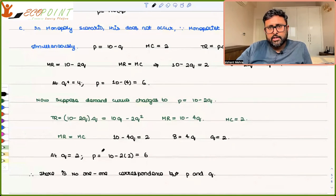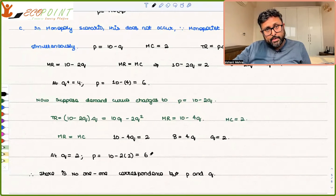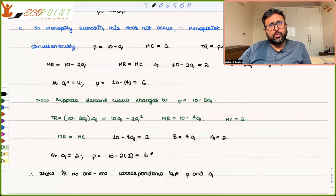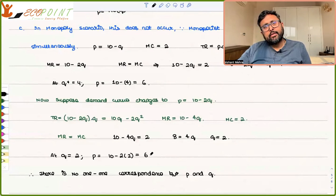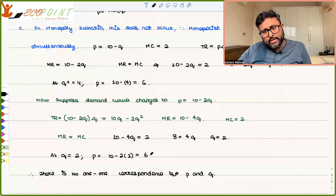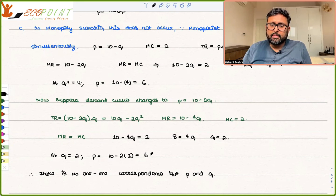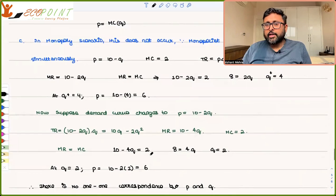The moment demand has changed, the quantities have changed, but the price has not. So at same price, different quantities can be for the monopolists. So there is no one-to-one correspondence between P and Q. In supply function, you need to have that. So we say that the monopolist doesn't have a supply curve. Monopolist doesn't have a supply curve. So this is a mathematical example for the same. Thank you.